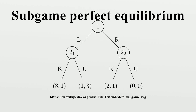In game theory, a sub-game perfect equilibrium is a refinement of a Nash equilibrium used in dynamic games. A strategy profile is a sub-game perfect equilibrium if it represents a Nash equilibrium of every sub-game of the original game. Informally, this means that if the players played any smaller game that consisted of only one part of the larger game and the behavior represents a Nash equilibrium of that smaller game, then the behavior is a sub-game perfect equilibrium of the larger game. Every finite extensive game has a sub-game perfect equilibrium.